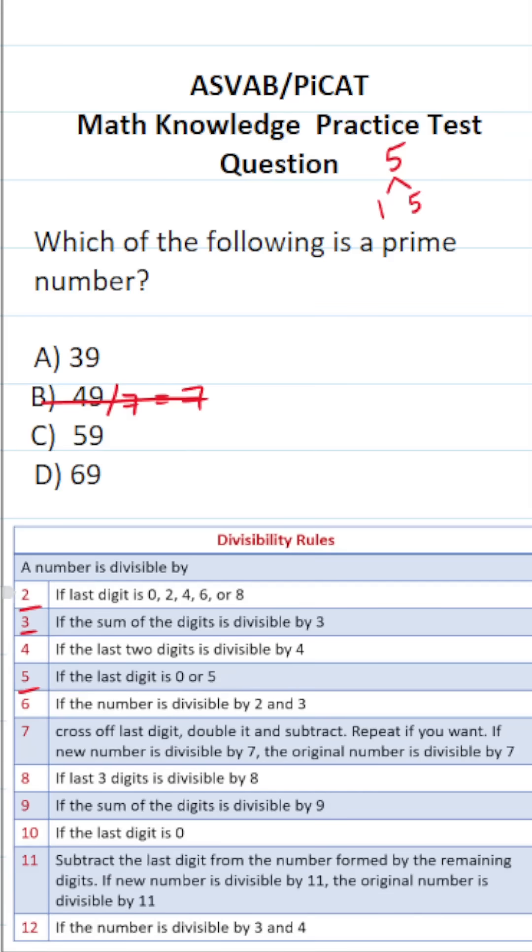Now let's check the divisibility rule for two. It says if the last digit in the number is zero, two, four, six, or eight, then that number is divisible by two and can't be prime. We look at the last digits in all of our answer choices. They're all nine, so the divisibility rule for two really doesn't help us in this case.